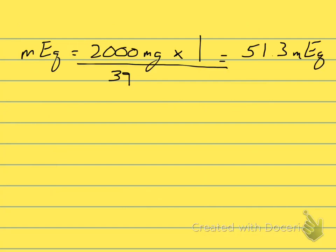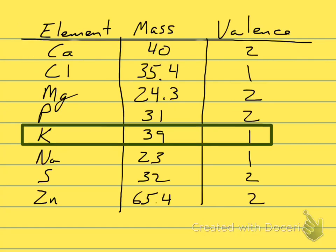So let's say that a doctor orders an 85 milliequivalent sodium diet. So we need to convert this into milligrams.